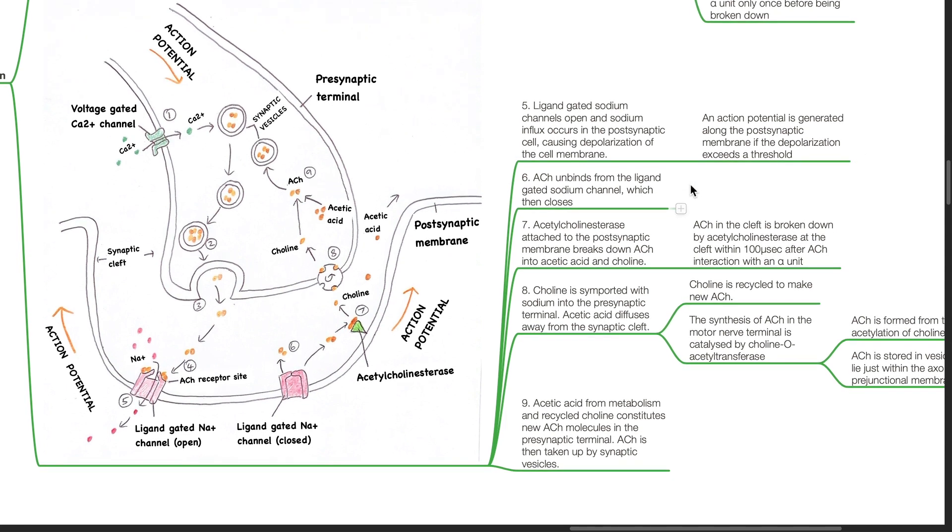Acetylcholine esterase attached to the postsynaptic membrane breaks down acetylcholine into acetic acid and choline. Acetylcholine in the cleft is broken down by acetylcholine esterase within 100 microseconds after acetylcholine interaction with an alpha unit. Choline is symported with sodium into the presynaptic terminal. Acetic acid diffuses away from the synaptic cleft.